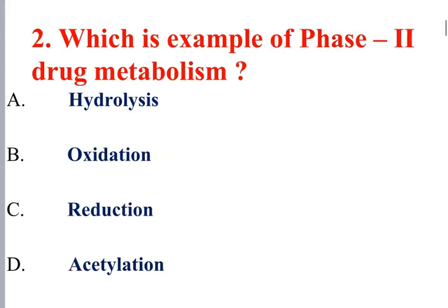Which is an example of phase 2 drug metabolism? Hydrolysis, oxidation, and reduction are phase 1 metabolism. Acetylation, sulfonation, and methylation are examples of phase 2 drug metabolism.